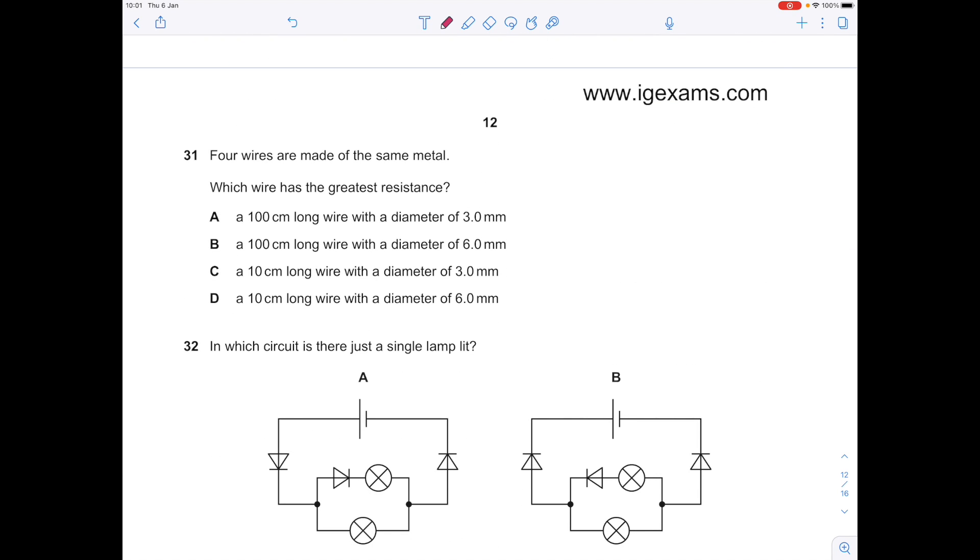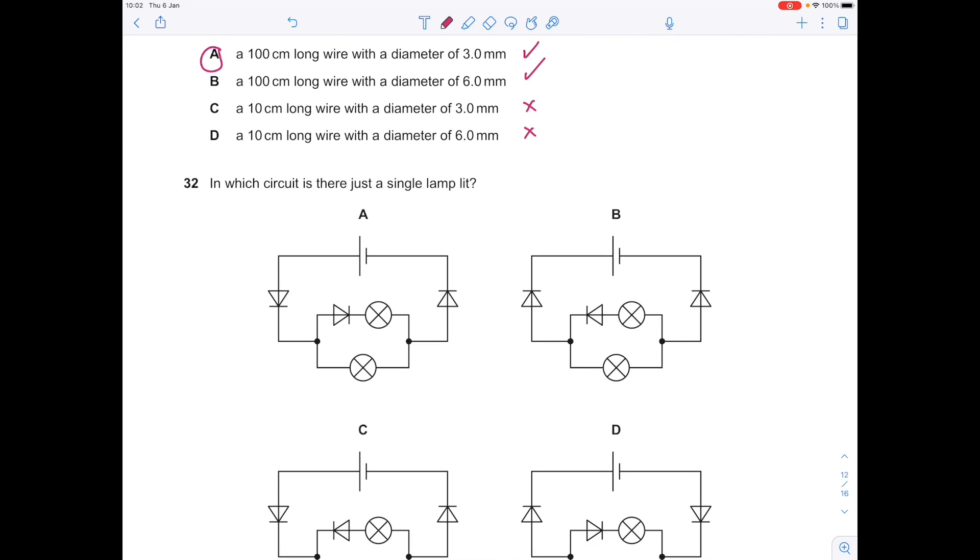Four wires are made of the same material. Which wire has the greatest resistance? Remember, with larger resistances you're going to have a narrow diameter and a longer wire. So we're going to pick between A and B because those are the longer wires. Which one has the narrower diameter? It's A, so the answer is 31A.